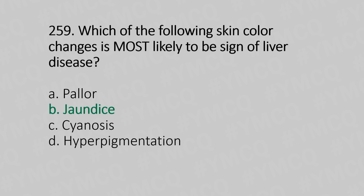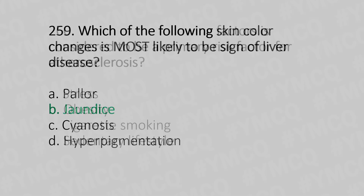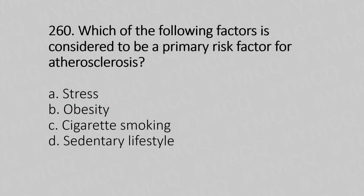Question 260: Which of the following factors is considered the primary risk factor for atherosclerosis? Option A: stress. Option B: obesity. Option C: cigarette smoking. Option D: sedentary lifestyle. The answer is Option C, cigarette smoking.